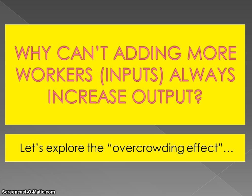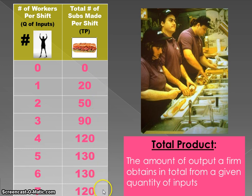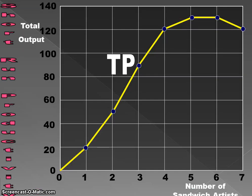We can't just keep increasing output forever. The example I'm going to use as I go through these terms, calculations, and concepts is that of Subway and the sandwich artists. This data shows us different numbers of workers that could be working at Subway during a shift — zero through seven as possibilities. The second column shows total product, which is the amount of output a firm obtains in total from a given quantity of input — so depending on the number of workers, here's how many sandwiches can be made during that shift altogether.